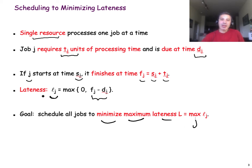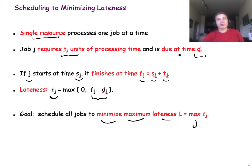Of course, you can think about other variations of this problem. For instance, one variation would be that you try to minimize the summation of all of these latenesses. You can also think about the variation in which the deadlines are hard, and if you cannot meet a deadline, then you cannot even do that job. There are many variations, but for now I want us to focus on this specific instance of the problem.